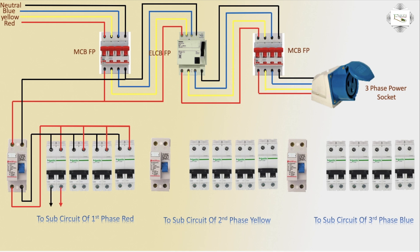From the first phase outlet, the power supply goes to socket, fan, light — anything using single-phase line. The three-phase line is converted to single-phase line. Single-phase line means 220 volts between neutral and phase, and phase-to-phase is 440 volts.